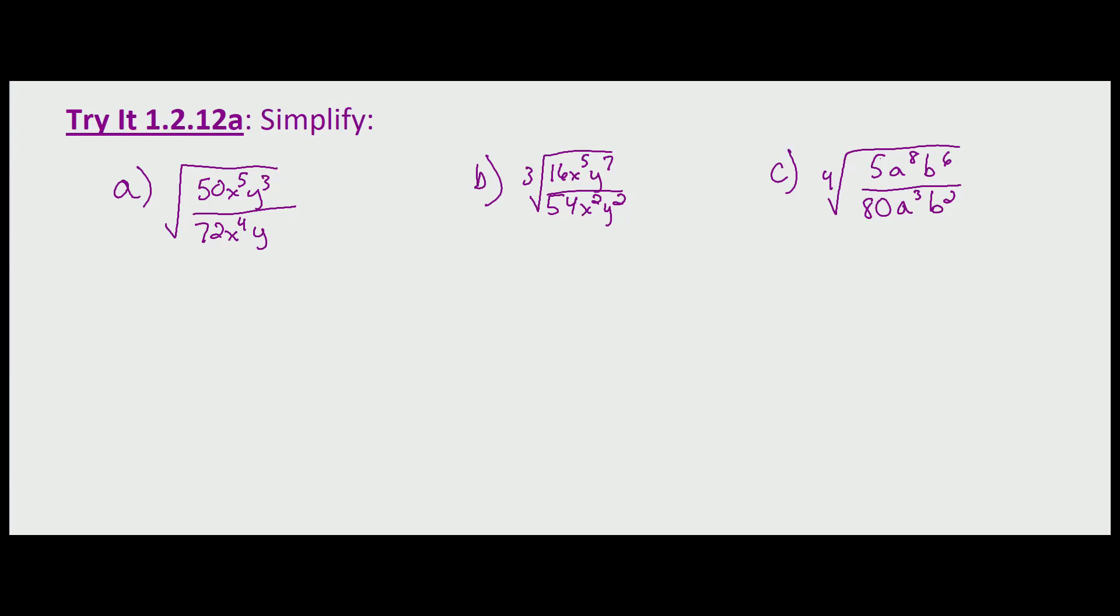In the same progression as we did with less complicated problems with either numbers or variables, now we're adding to the mix common factors in the numerator and denominator with numbers and variables. We simplify, and this should always be our first step if possible: simplify what's under the radical first. Looking at part a, we have 50x to the fifth y cubed over 72x to the fourth y, and we're taking the square root.